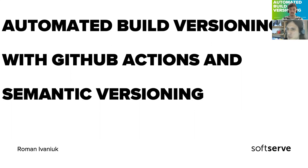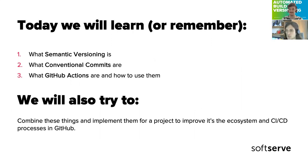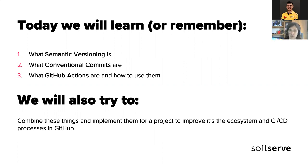Today we're going to look at Semantic Versioning and what it is — I presume most of you are already aware of it, and maybe most of you also use it when versioning your public API applications. We'll look at what Conventional Commits are and the problems they solve as a specification, and also look at GitHub Actions as a way to quickly and absolutely for free do something that is going to possibly cover all of your CI/CD needs for a long period of time.